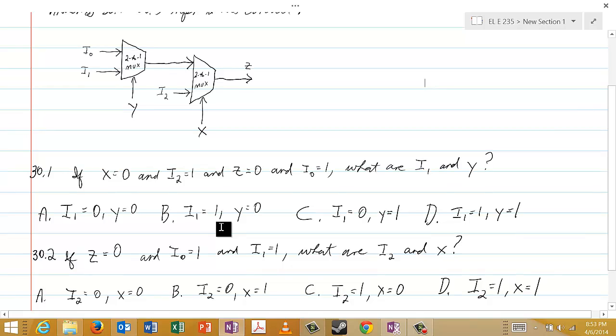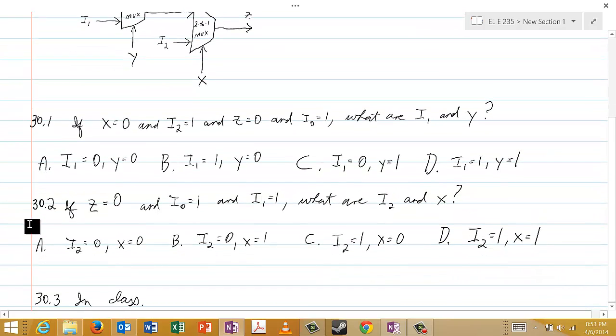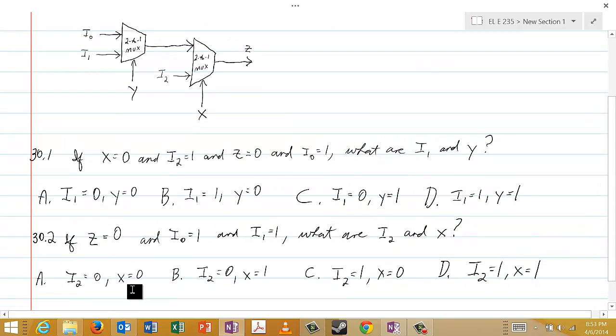That's question 30.1. And then for question 30.2, if Z is 0, and I0 is 1, and I1 is 1, what are I2 and X? And the choices are I2 is 0 and X is 0, I2 is 0 and X is 1, I2 is 1 and X is 0, or I2 is 1 and X is 1.